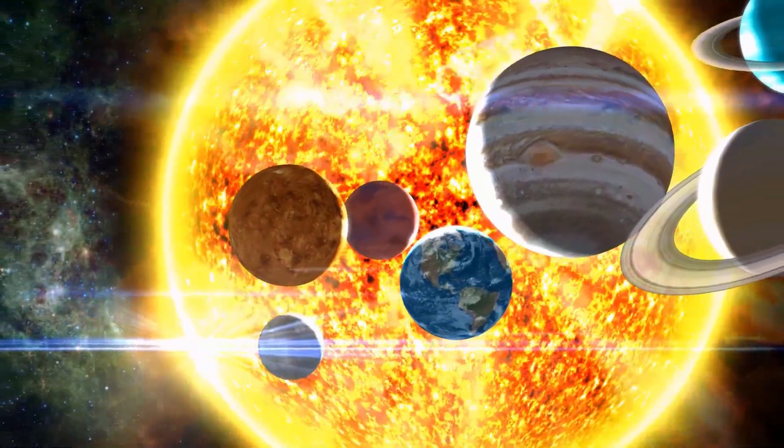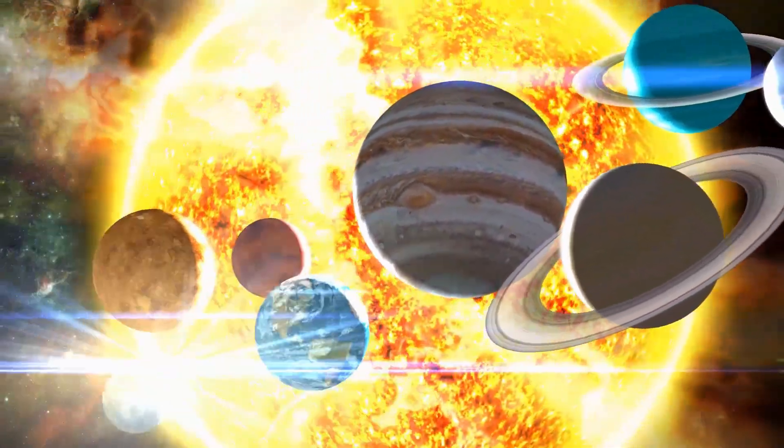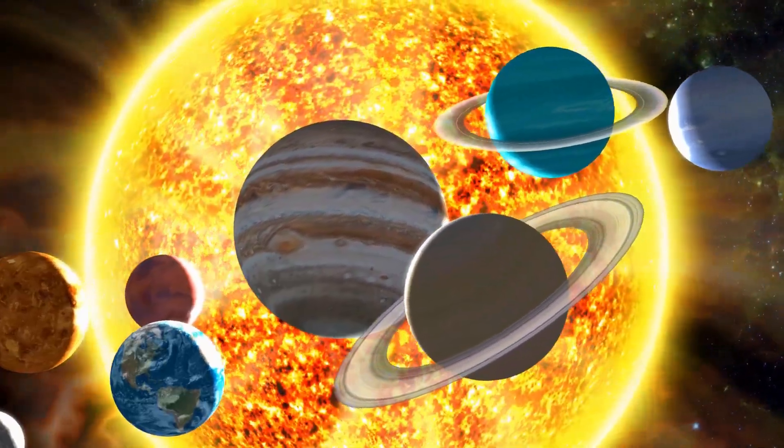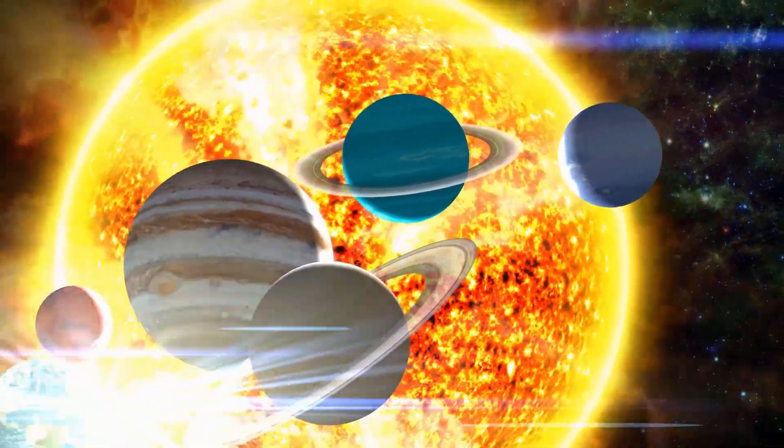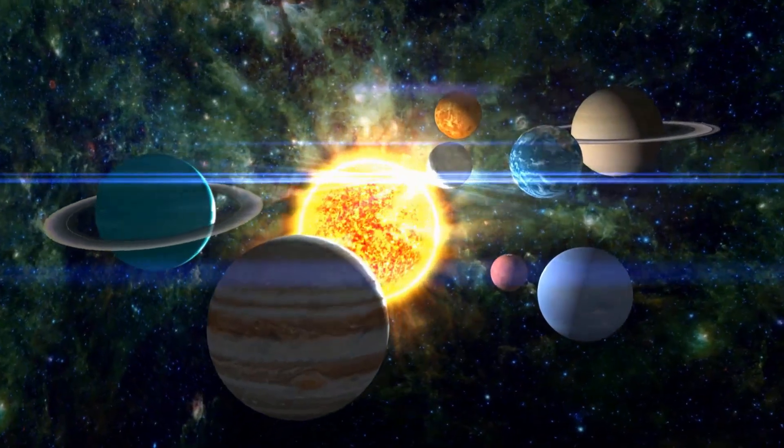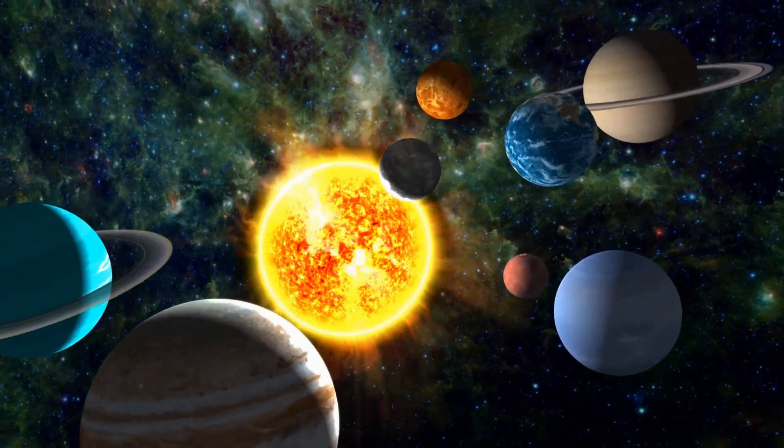The Sun, a nearly perfect sphere of hot plasma, is the star at the centre of our solar system. It is primarily composed of hydrogen and helium with trace amounts of heavier elements.